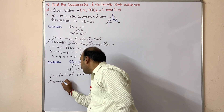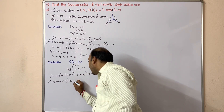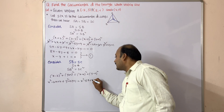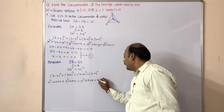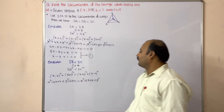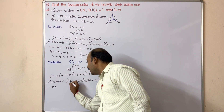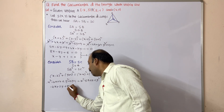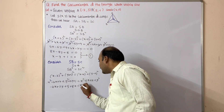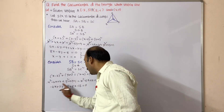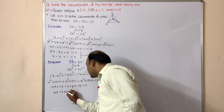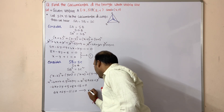Expanding: x² − 4x + 4 + y² + 2y + 1 = x² − 8x + 16 + y². Cancelling x² and y² from both sides: −4x + 2y + 5 = −8x + 16. Rearranging: 4x + 2y − 11 = 0. This is Equation 2.